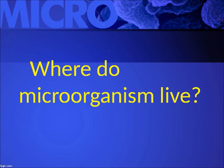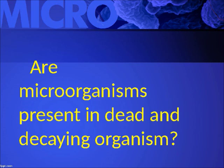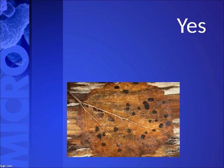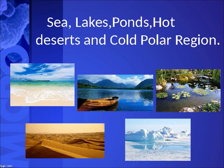Where do micro-organisms live? They live in water, air, soil, food, human bodies and animal bodies. Micro-organisms are also present in dead and decaying organisms. They are found in environments such as seas, lakes, ponds, hot deserts, and cold polar regions.